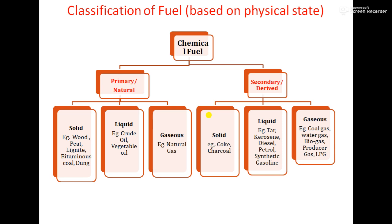Naturally occurring liquid fuels are vegetable oil and crude oil — crude oil is also called petroleum. Naturally occurring gaseous fuels are natural gas. So fuels are classified into two types: primary or natural, which is further classified into solid, liquid, and gaseous. Similarly, secondary fuel is also classified into solid, liquid, and gaseous.